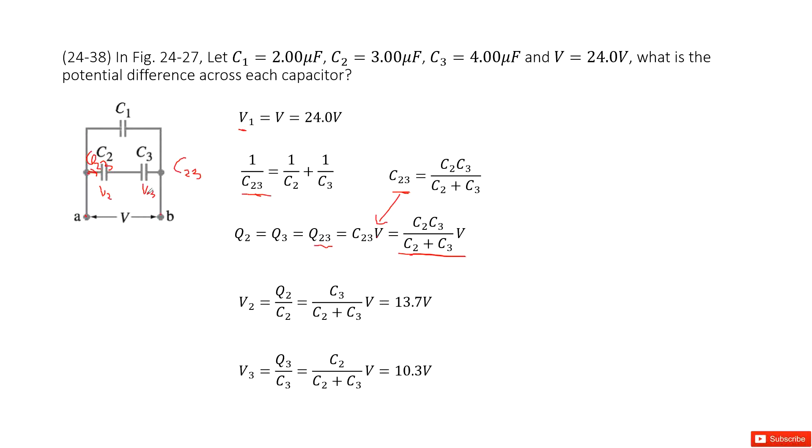As we discussed, C2 and C3 are in series connection, so Q2 equals Q3 equals Q23. So Q2 and Q3 are given here.